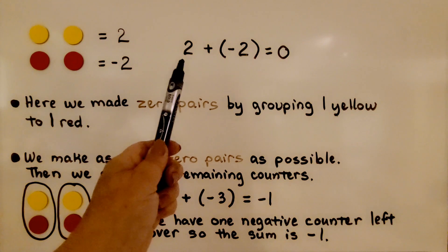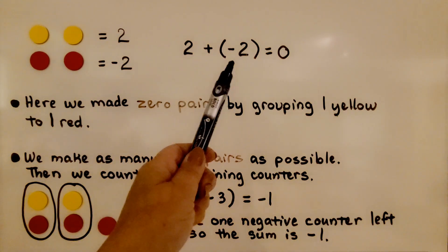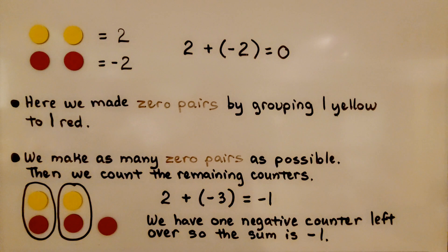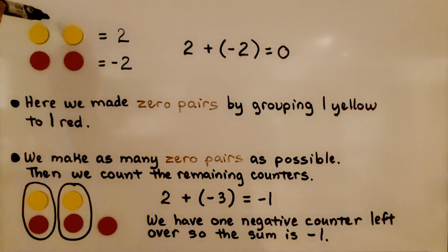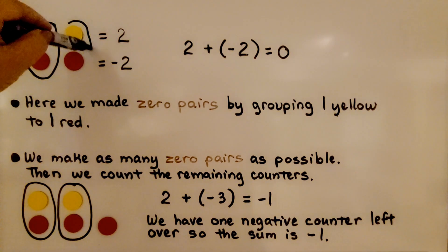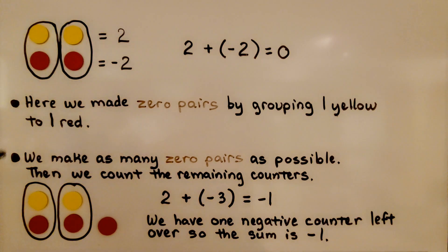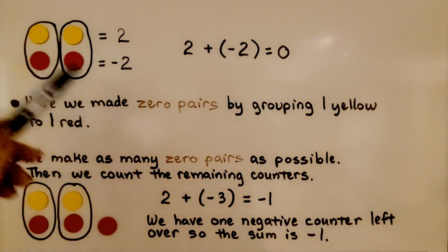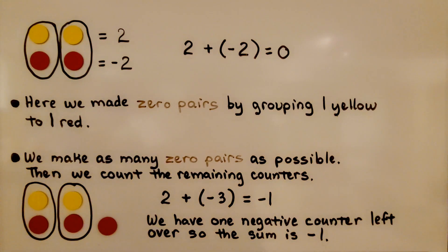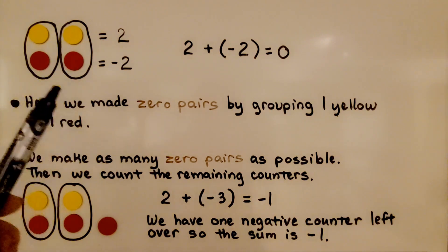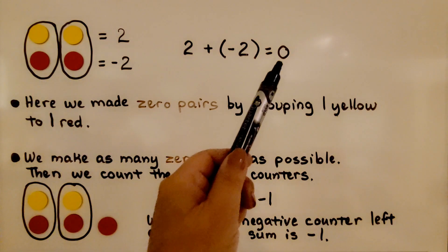When we add a positive two and a negative two, it's going to equal zero. We have two yellow counters representing positive two and two red counters. We make zero pairs by circling one positive with one negative, and they cancel each other out. We make as many zero pairs as possible, then count the remaining counters. Here there were none remaining, so our sum is zero.